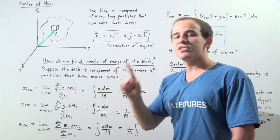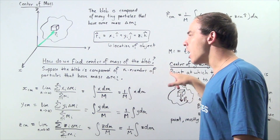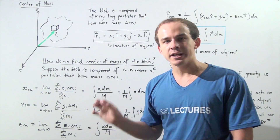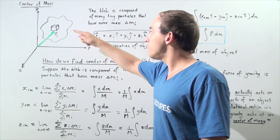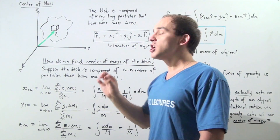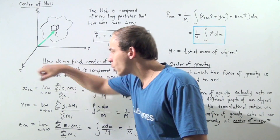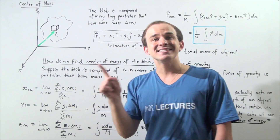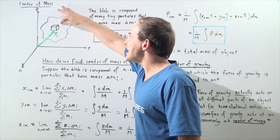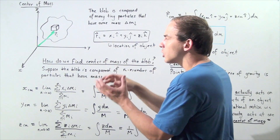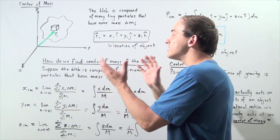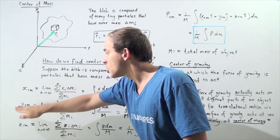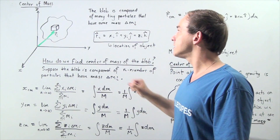So we do the following. We suppose that the blob is composed of n particles that each have mass Δmi. Then we find the individual coordinate points — the vector of the center of mass. Because we have a three-dimensional object, the center of mass will have three coordinate points: the x coordinate, the y coordinate, and the z coordinate. We take the limit as n approaches infinity, making these tiny particles smaller and smaller until they're infinitely small, and we take the sum of all the centers of mass of these tiny particles. That gives us each respective coordinate point of the center of mass of the entire blob.